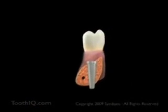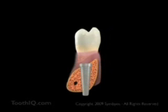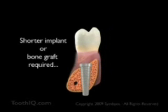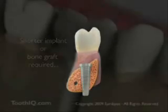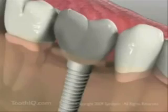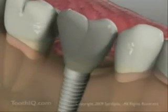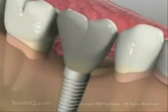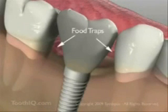Bone grafting must be performed in advance, or specially modified implants must be used. Bone resorption can compromise the dentist's ability to place an aesthetic dental implant with normal contours. An unnaturally long or tapered implant crown may result, which creates large triangular food traps and poor aesthetics.